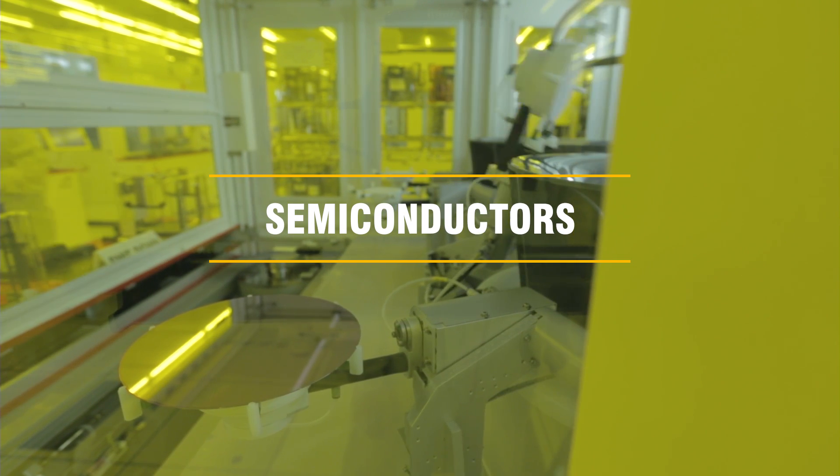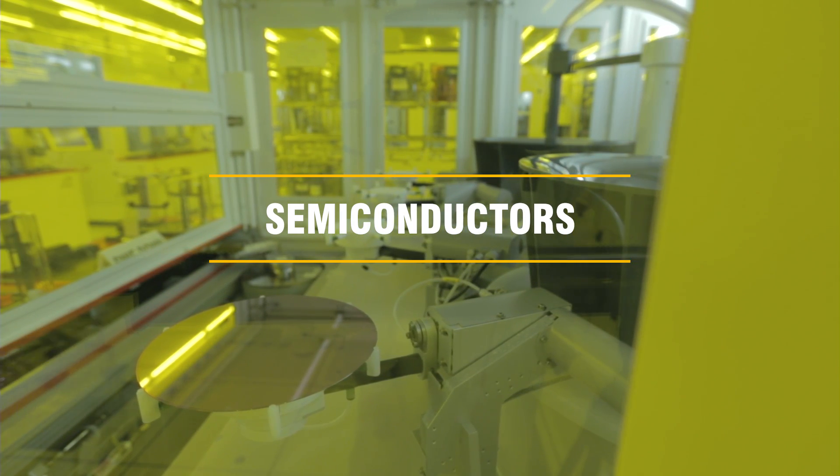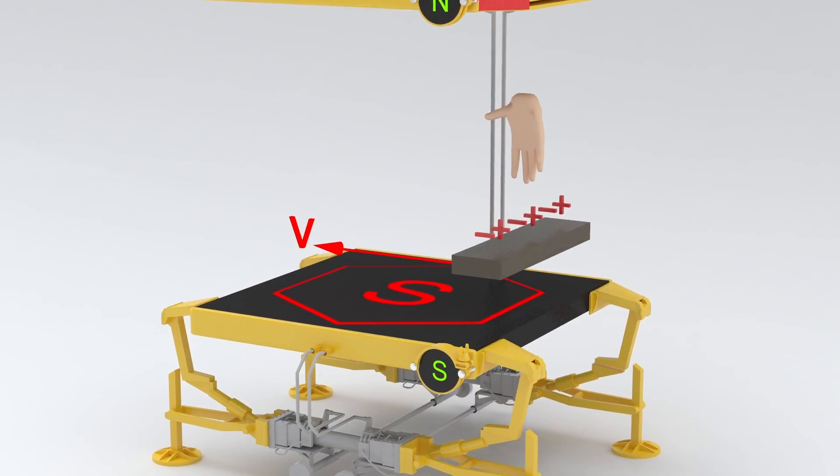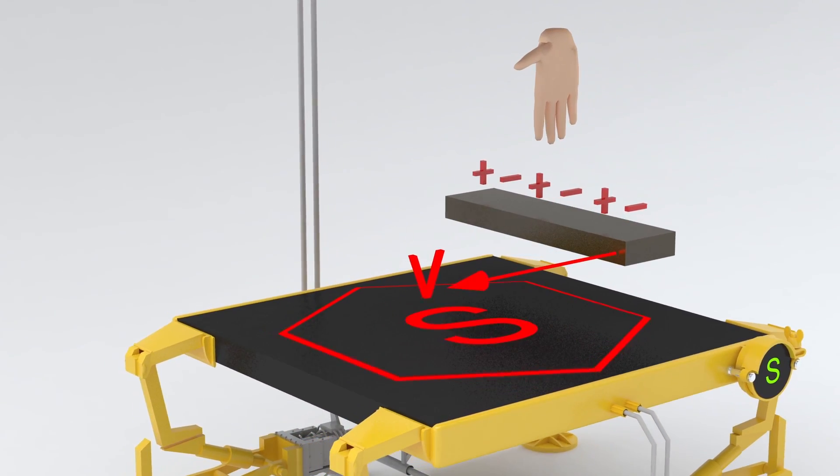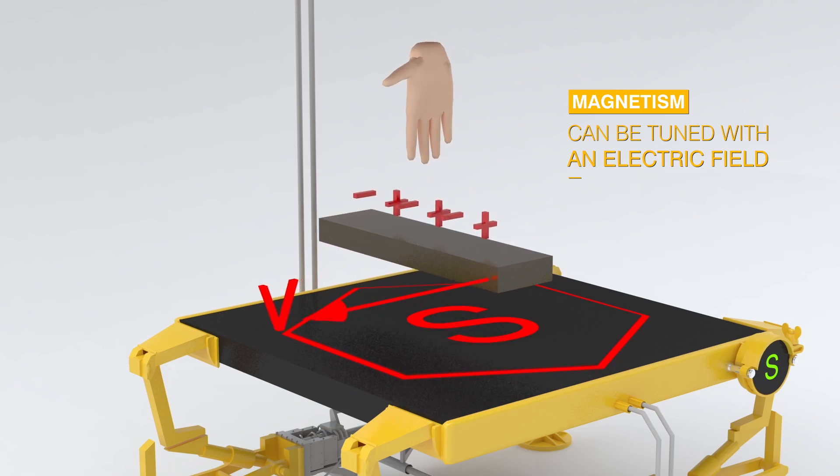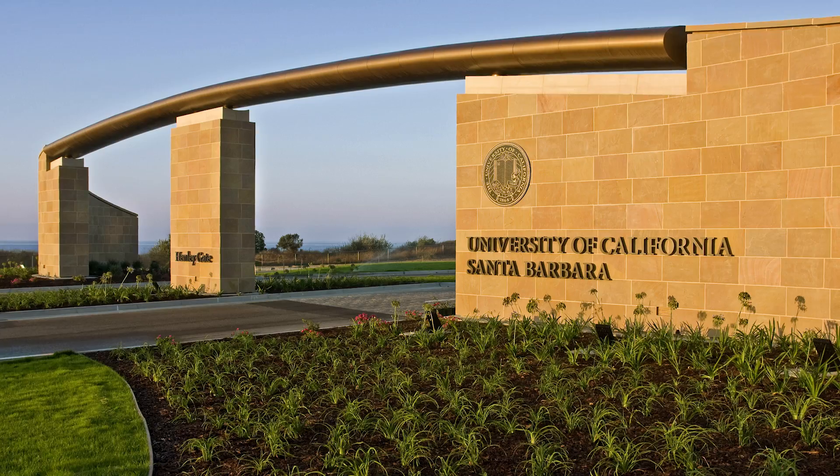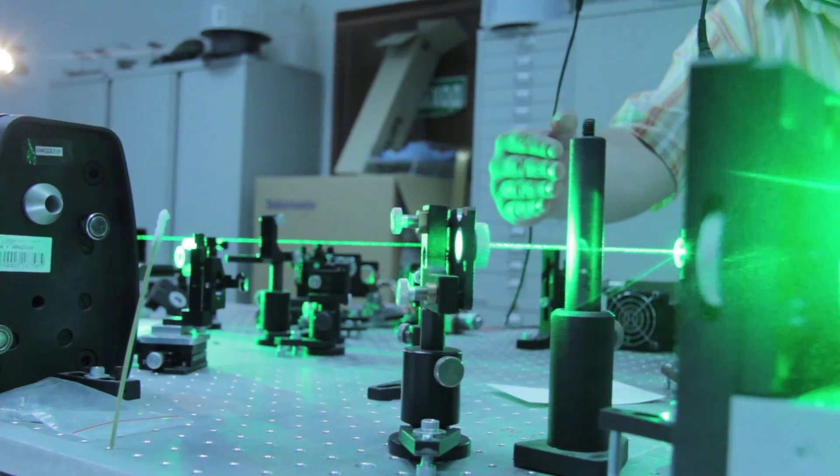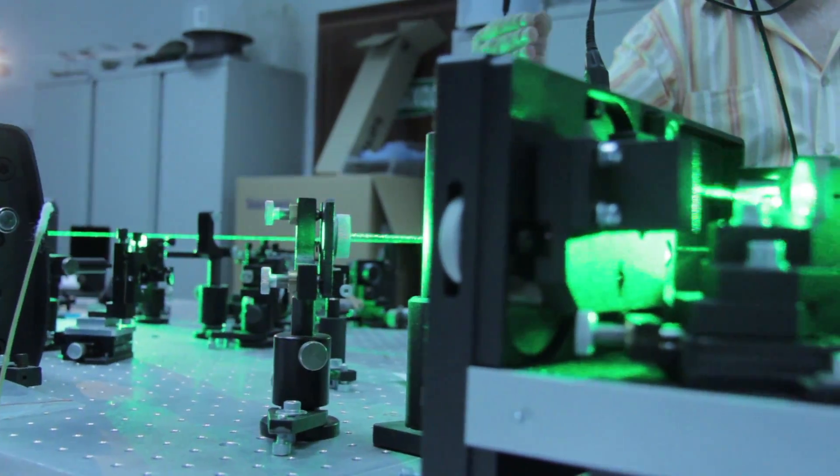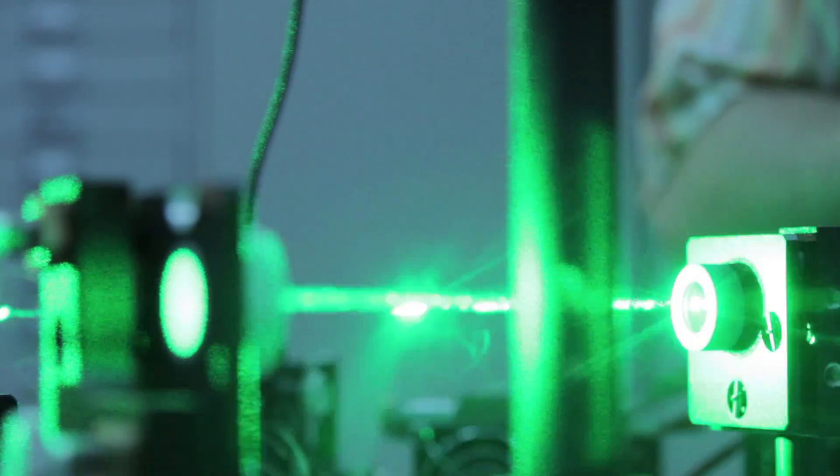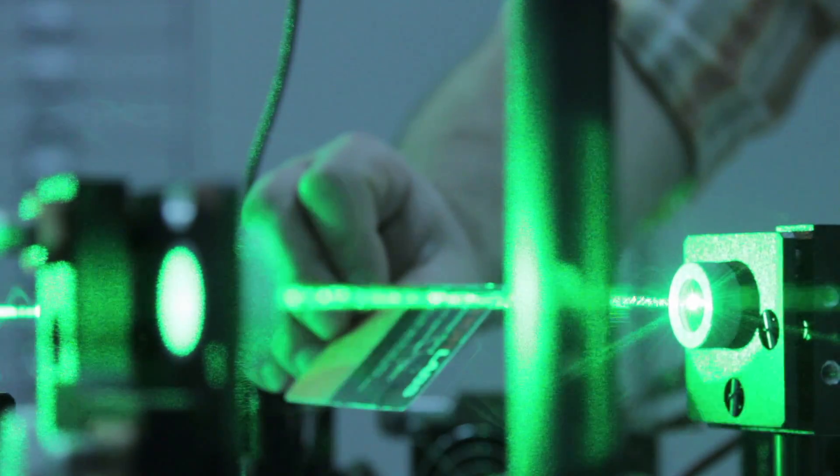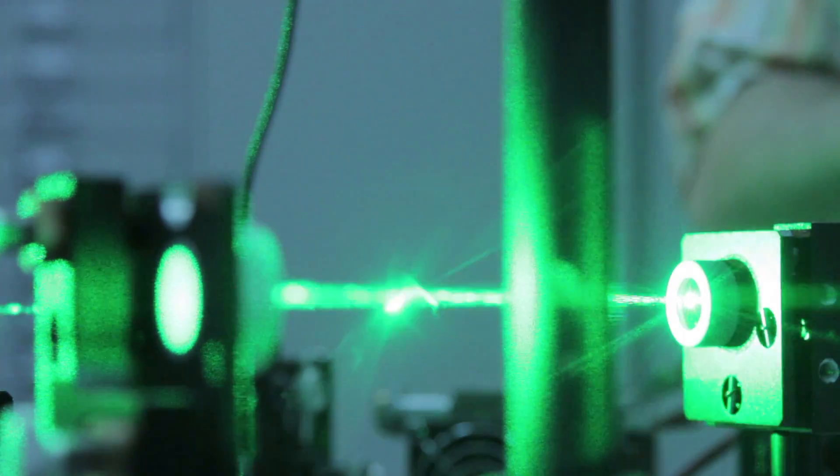It turned out that there were some very interesting properties for spins in semiconductors. There were two interesting experiments. One occurred in Japan, and this was the fact that magnetism could be effectively tuned with an electric field. At the same time, there was an experiment at Santa Barbara where a semiconductor was hit with a circularly polarized laser, and a magnetic state was induced. So by hitting this material with a laser, you could make it magnetic.